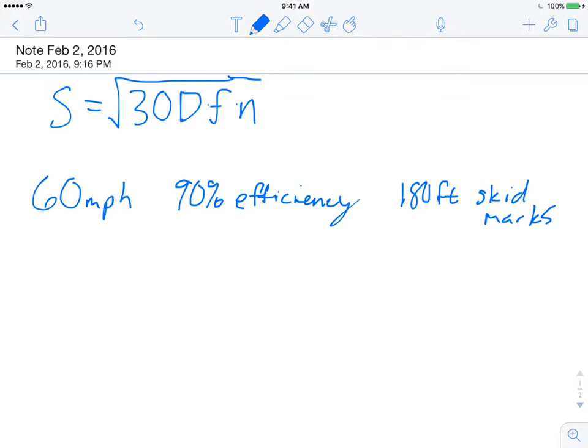So what I've done is I've set up a scenario. We have a car that's driving 60 miles per hour. When it breaks, it's going to have a 90% efficiency and it will have 180 foot skid marks.